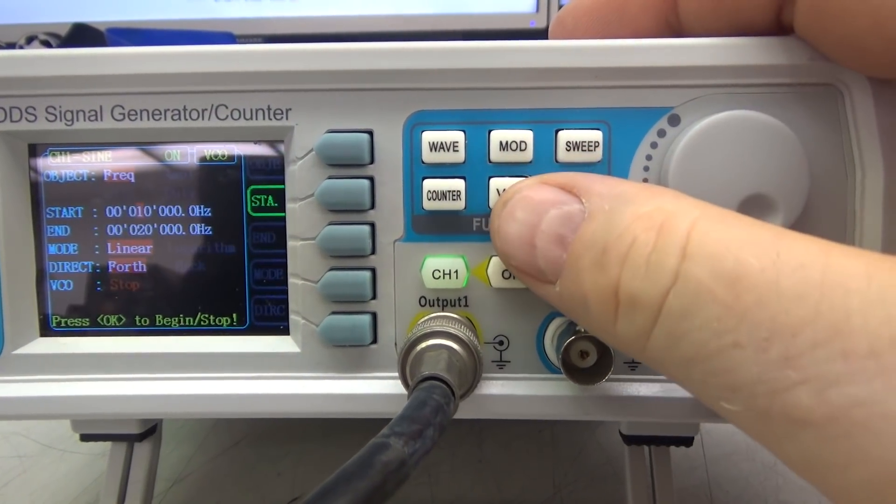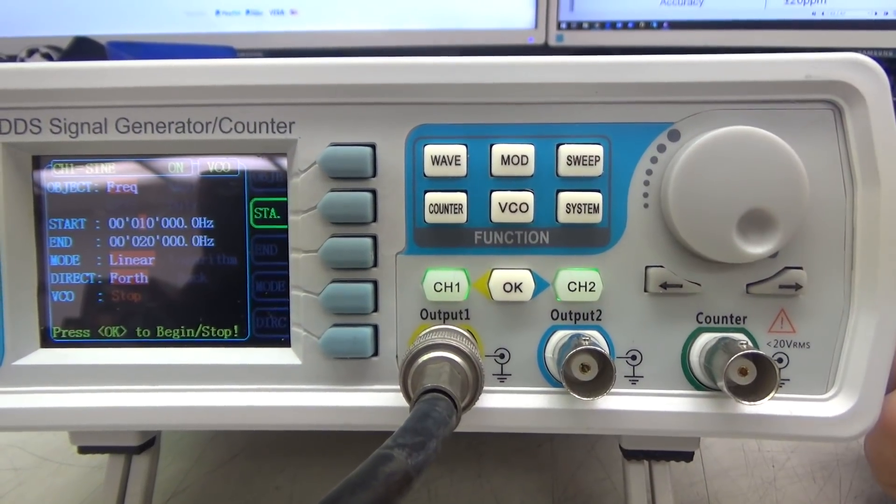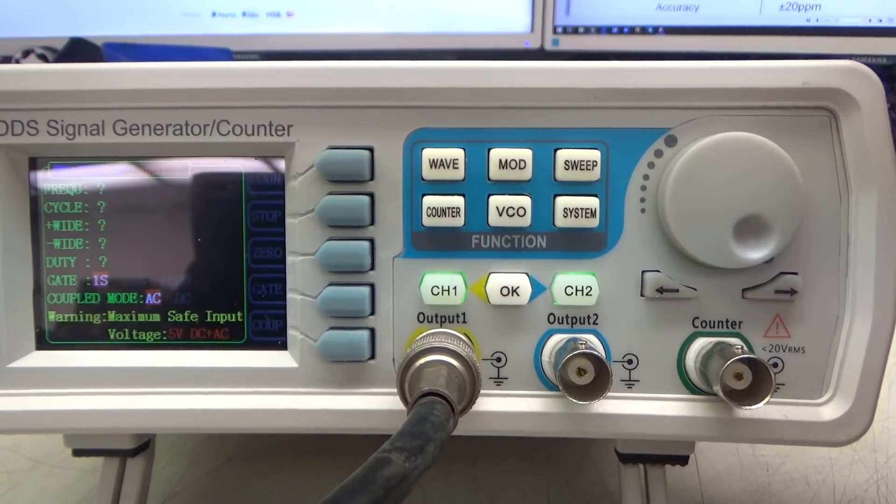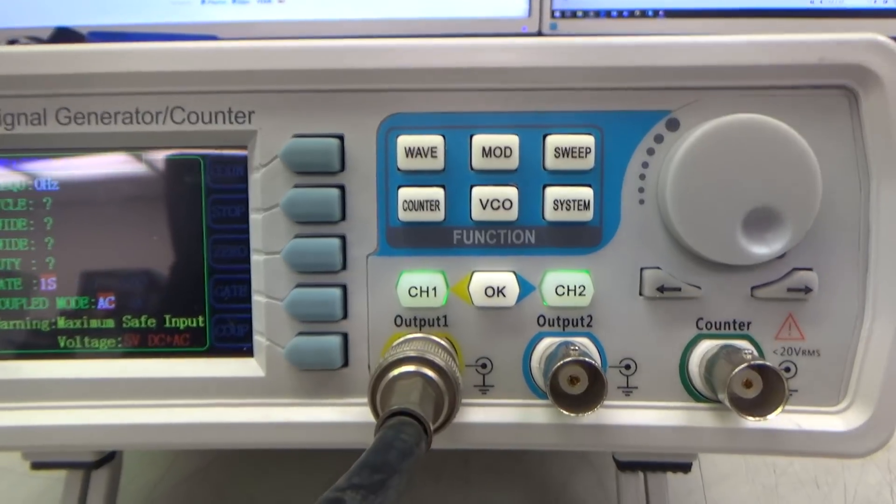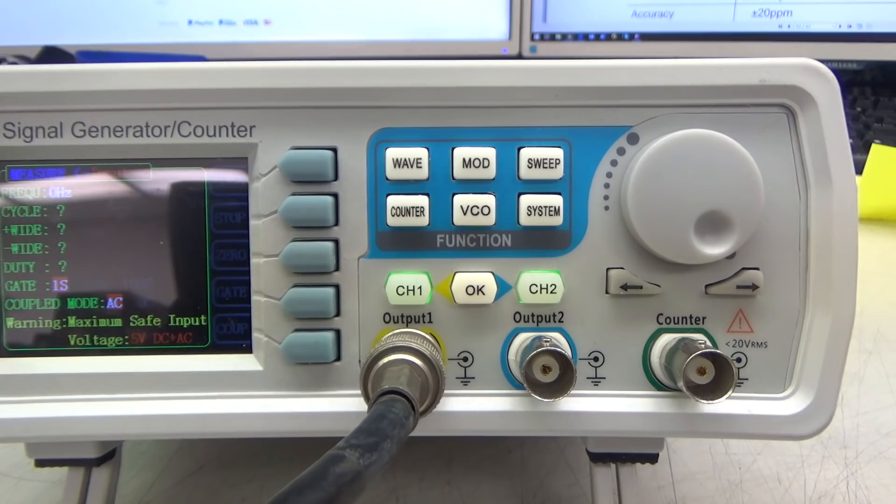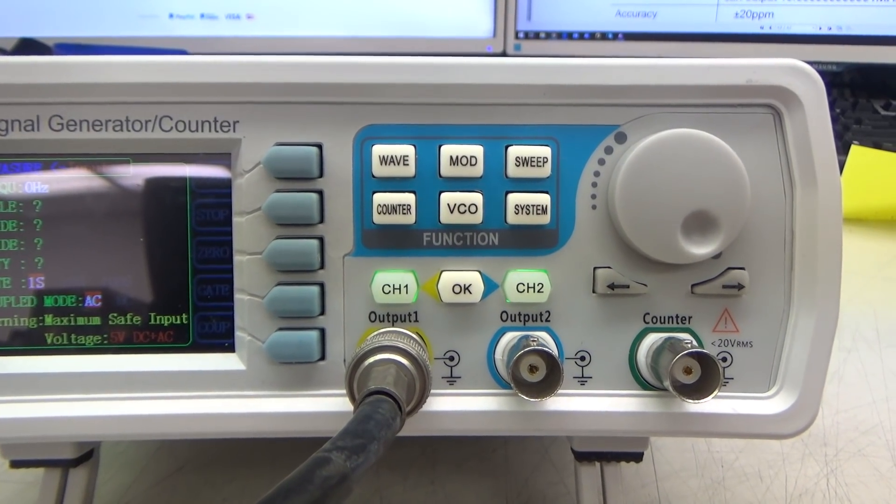It also has a voltage controlled oscillator with external voltage control or internal. And it also has a frequency counter where you can take the same signal and feed it right back in. Or an external signal and it will tell you what the frequency is.